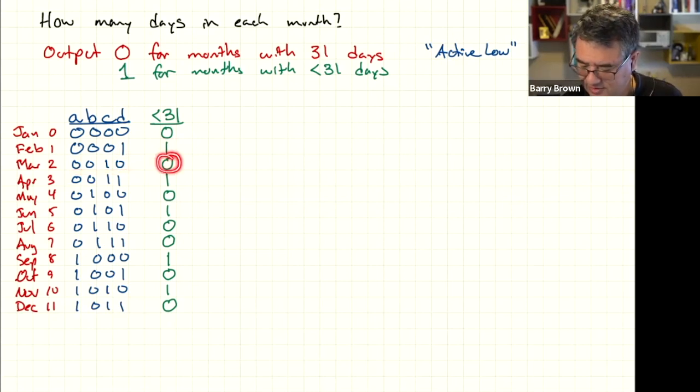March has 31 days, it gets a zero. April has 30 days, so it gets a one. And on down the chart.